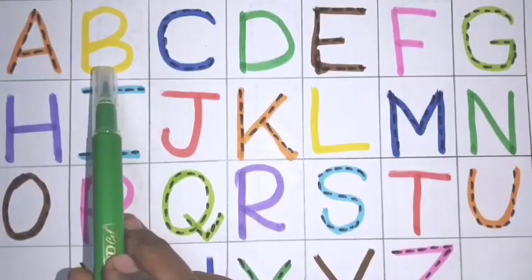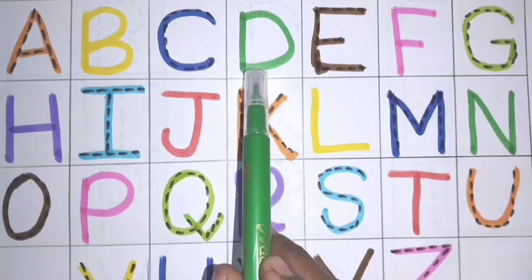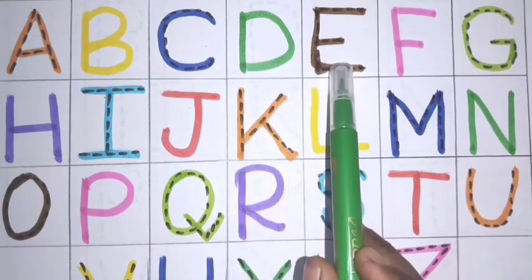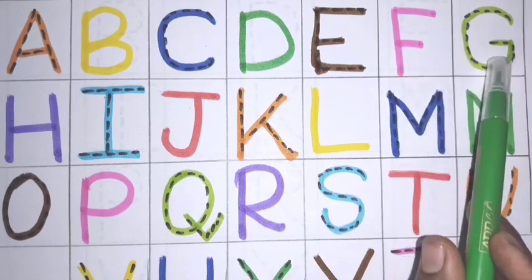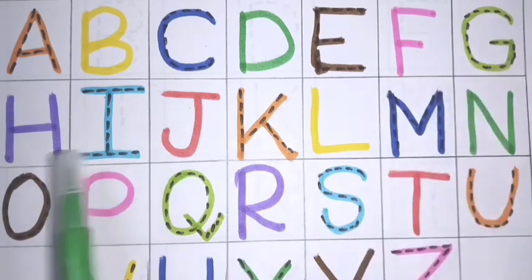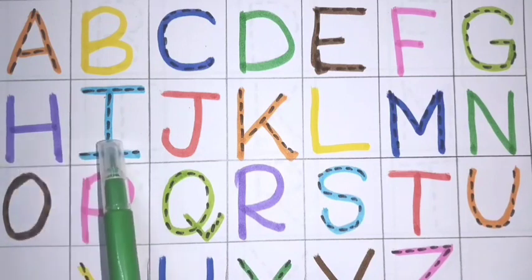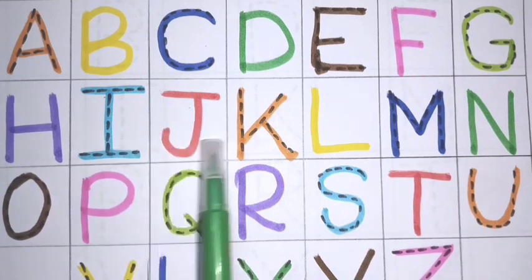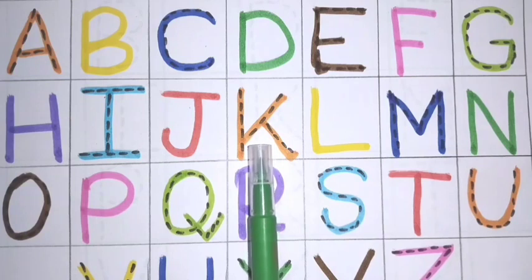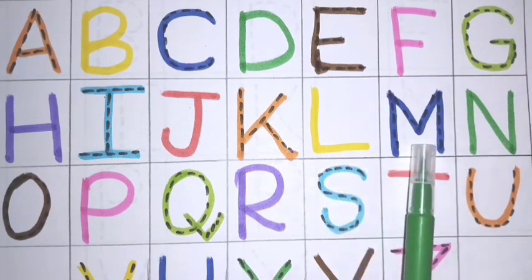A for apple. B, B for ball. C, C for cat. D, D for dog. E, E for elephant. F, F for fish. G, G for giraffe. H, H for horse. I, I for ice cream. J, J for jug. K, K for kite. L, L for lemon. M, M for money.